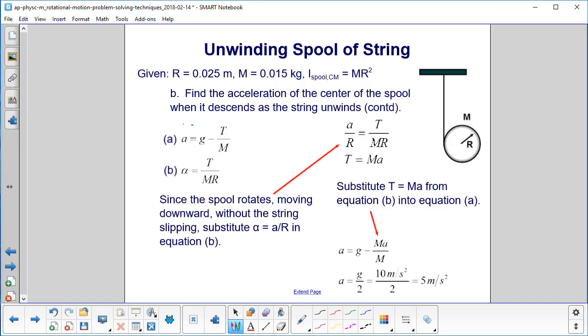Here's our two equations from the previous slide. We have the linear and we have the rotational. We'll work with the rotational first. Since the spool rotates moving downward and the string is not slipping, we can make this substitution right here in equation B. So instead of alpha, we're going to have A over R. So A over R equals T over MR. And that tells us that tension is equal to MA.